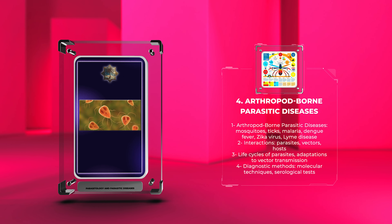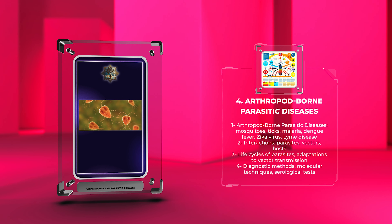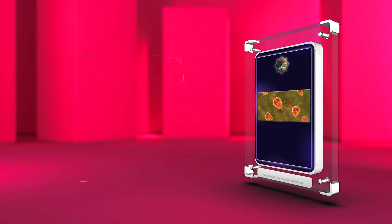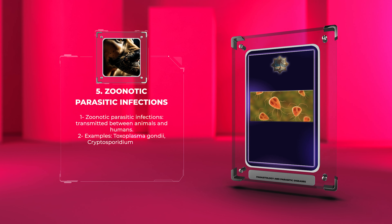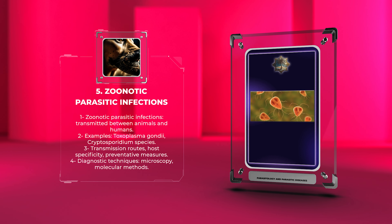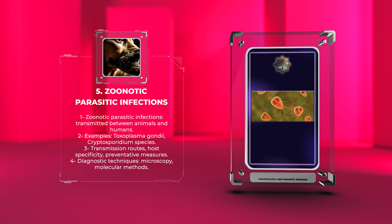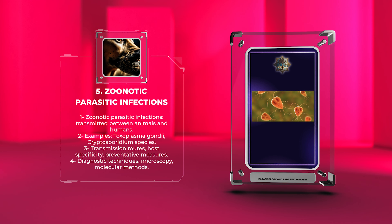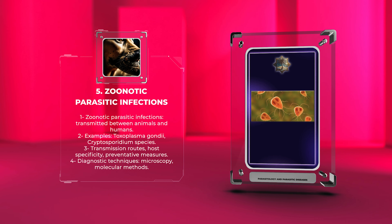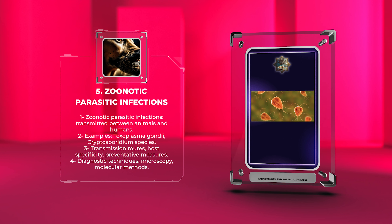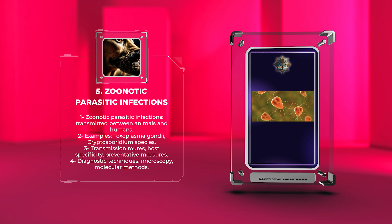Diagnostic methods, including molecular techniques and serological tests, will be explained. Zoonotic parasitic infections: Zoonotic parasitic diseases are those that can be transmitted between animals and humans. In this topic, we will focus on specific examples like Toxoplasma gondii and Cryptosporidium species. We will discuss the transmission routes, host specificity, and preventative measures for these diseases. Diagnostic techniques such as microscopy and molecular methods will also be covered.